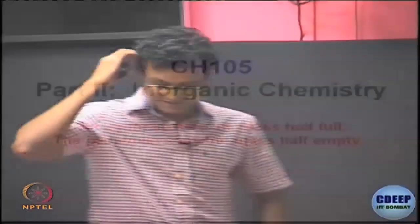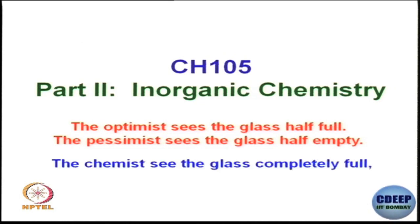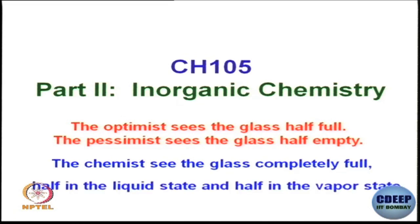Let us start with some simple understanding. An optimist sees the glass half full, the pessimist sees the glass half empty, but the chemist — hopefully the best of all of them — sees the glass completely full: half in liquid state, half in vapor.